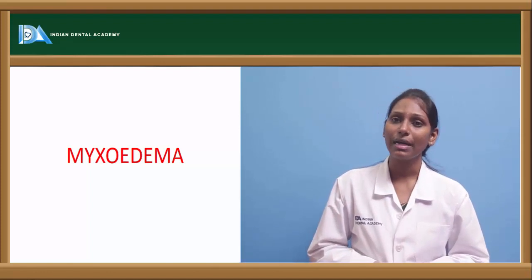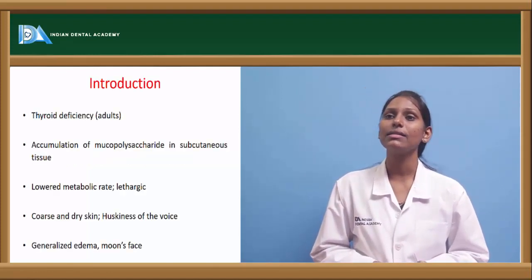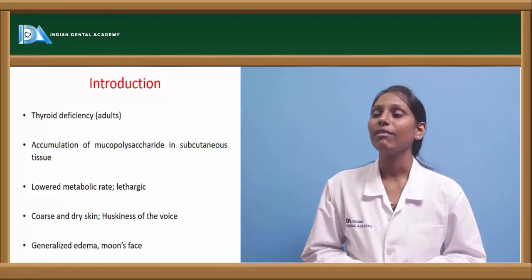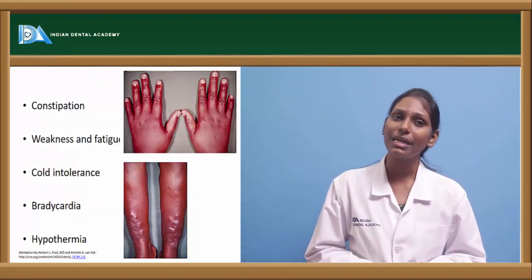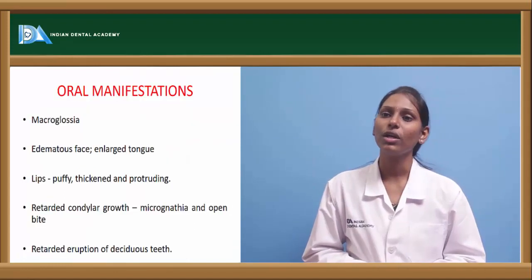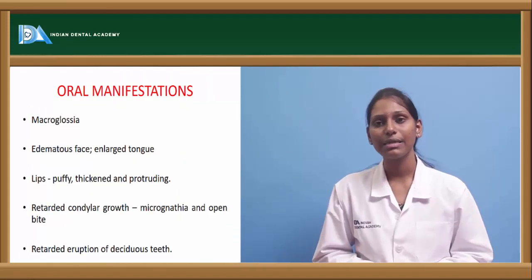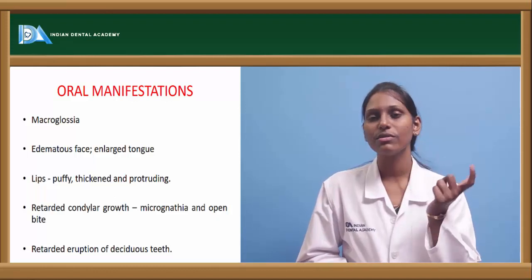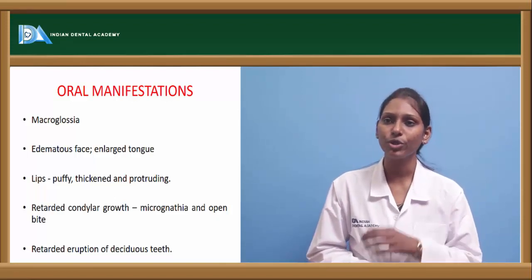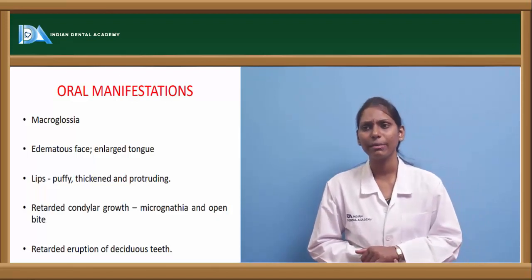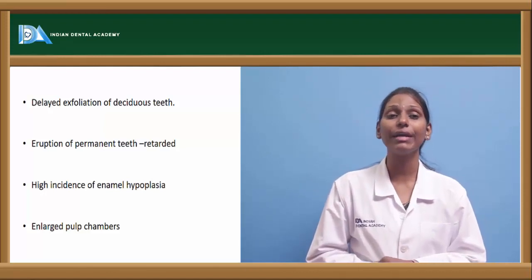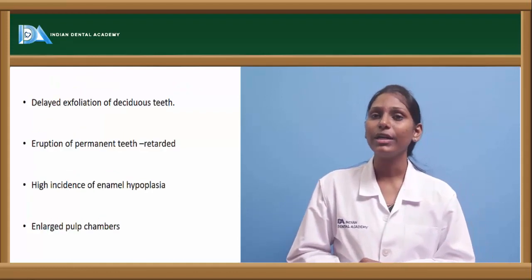Myxedema is hypothyroidism in adults, characterized by accumulation of mucopolysaccharides in subcutaneous tissues. Patients have lowered metabolic rate, lethargy, coarse and dry skin, husky voice, generalized edema, and moon face. Other features include constipation, weakness, bradycardia, and cold intolerance or hypothermia. Oral manifestations of myxedema include macroglossia, edema of the face (moon face), puffy thickened and everted lips, retarded condylar growth causing micrognathia and open bite, retarded eruption of deciduous and permanent teeth, high incidence of enamel hypoplasia, enlarged pulp chambers, and delayed exfoliation of deciduous teeth.